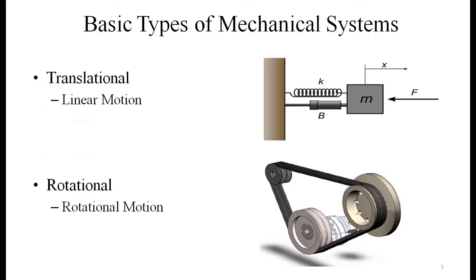The basic types of mechanical systems are translational (linear motion) and rotational. As shown in the picture, translational motion is illustrated by the spring-mass-damper system, where a force F applied on the mass in the horizontal x-direction produces linear motion. Rotational motion involves pulleys and belt systems where a shaft rotates and drives other components via a belt.